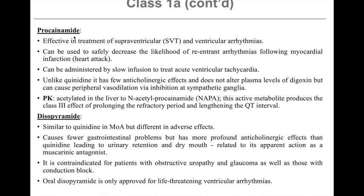Procainamide is effective in the treatment of supraventricular and ventricular arrhythmias and can be used to safely decrease the likelihood of re-entrant arrhythmias following myocardial infarction. It can be administered by slow infusion to treat acute ventricular tachycardia. Unlike quinidine, it has few anticholinergic effects and does not alter plasma levels of digoxin, but it can cause peripheral vasodilation via inhibition of the sympathetic ganglia. It is acetylated in the liver to a metabolite called N-acetylprocainamide (NAPA), an active metabolite that can produce the class 3 effect of prolonging the refractory period and lengthening the QT interval.